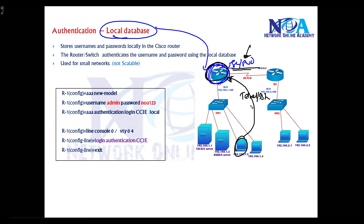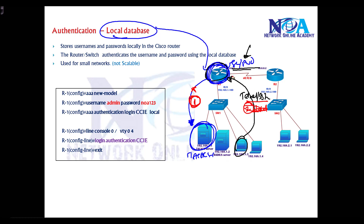We can also tell the router to send this information to external servers like a TACACS server, and we can do external server-based authentication as well. Commonly, we use external server-based authentication as the primary method, and if that fails we can always use the local database as a fallback authentication method.